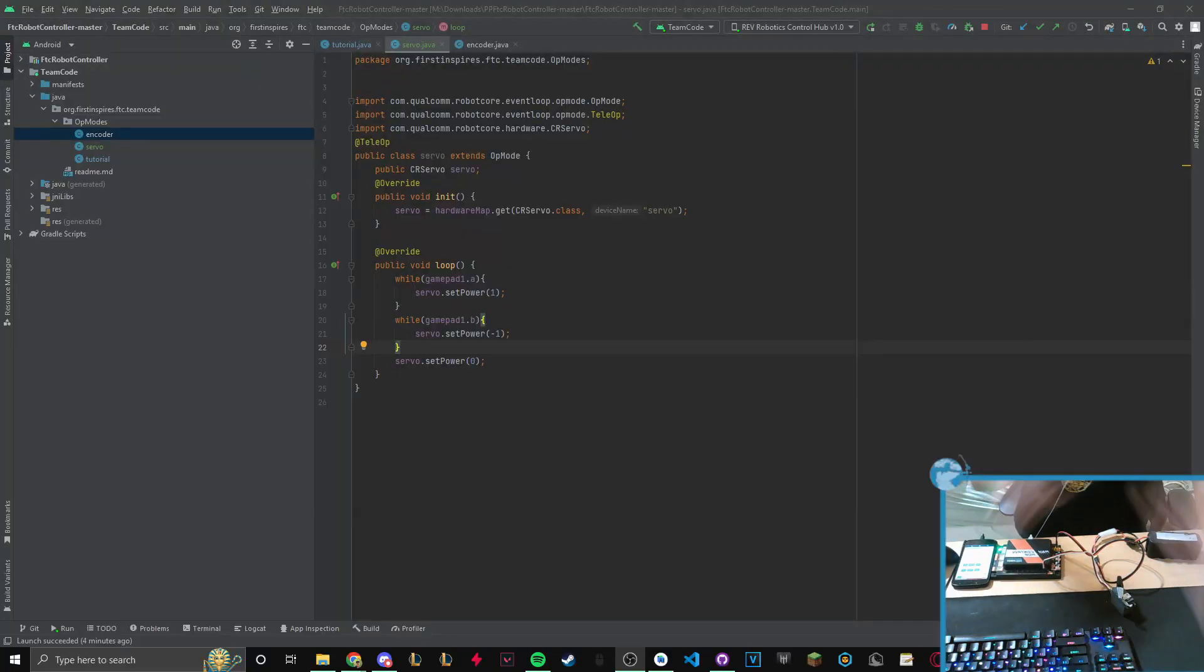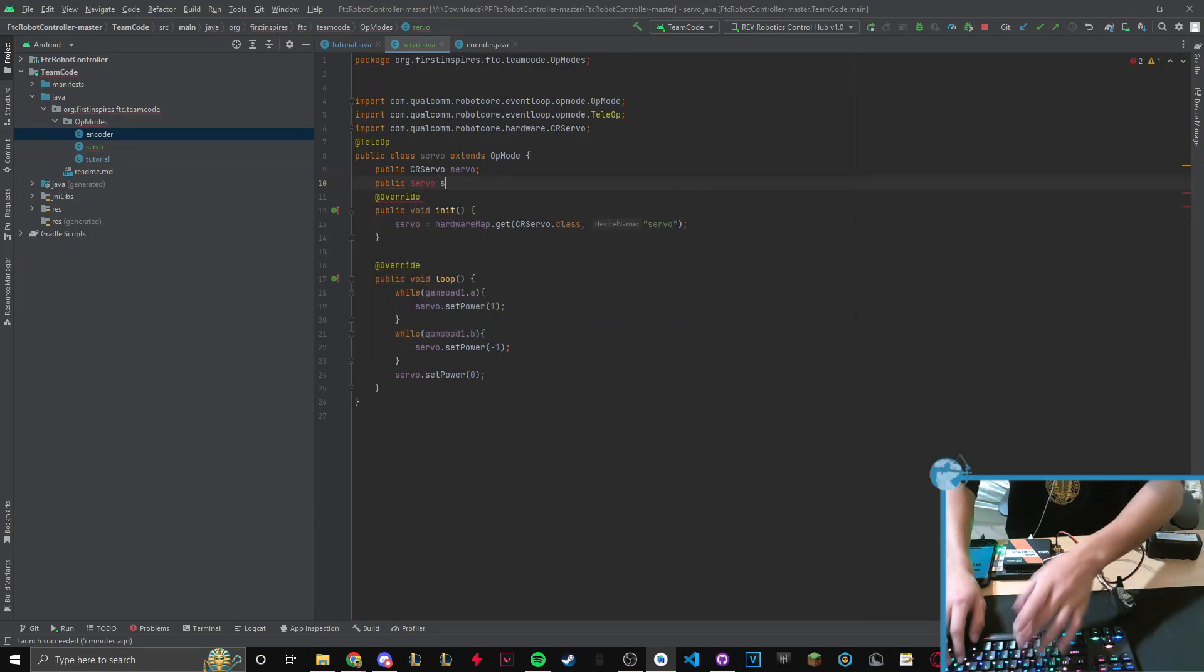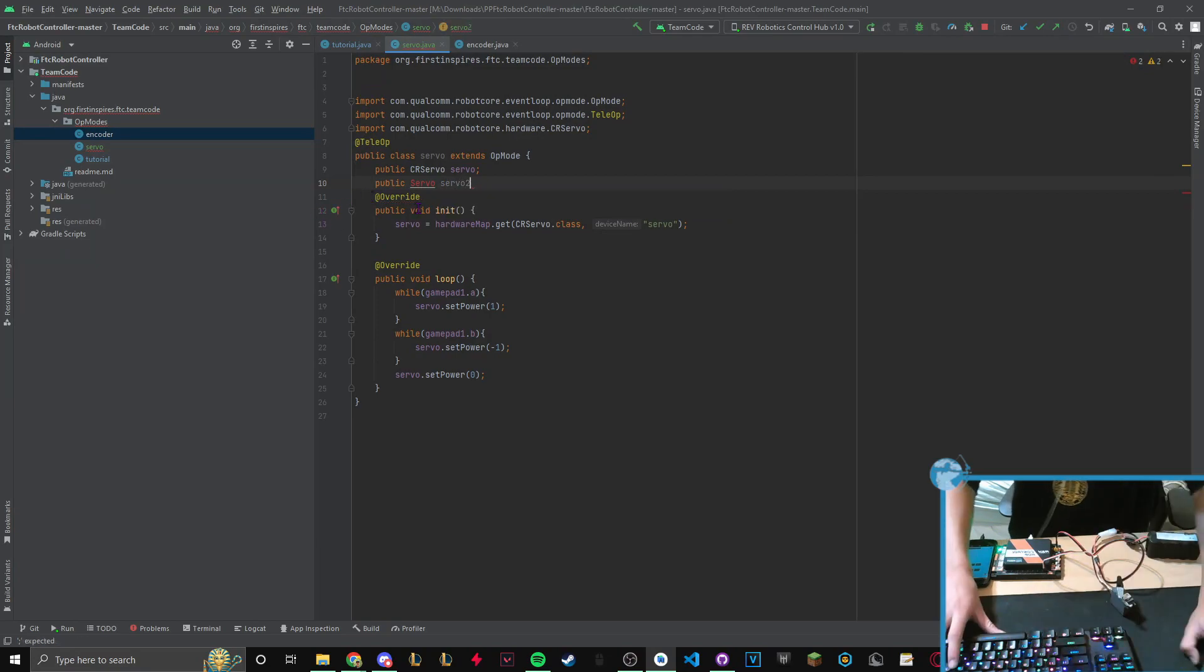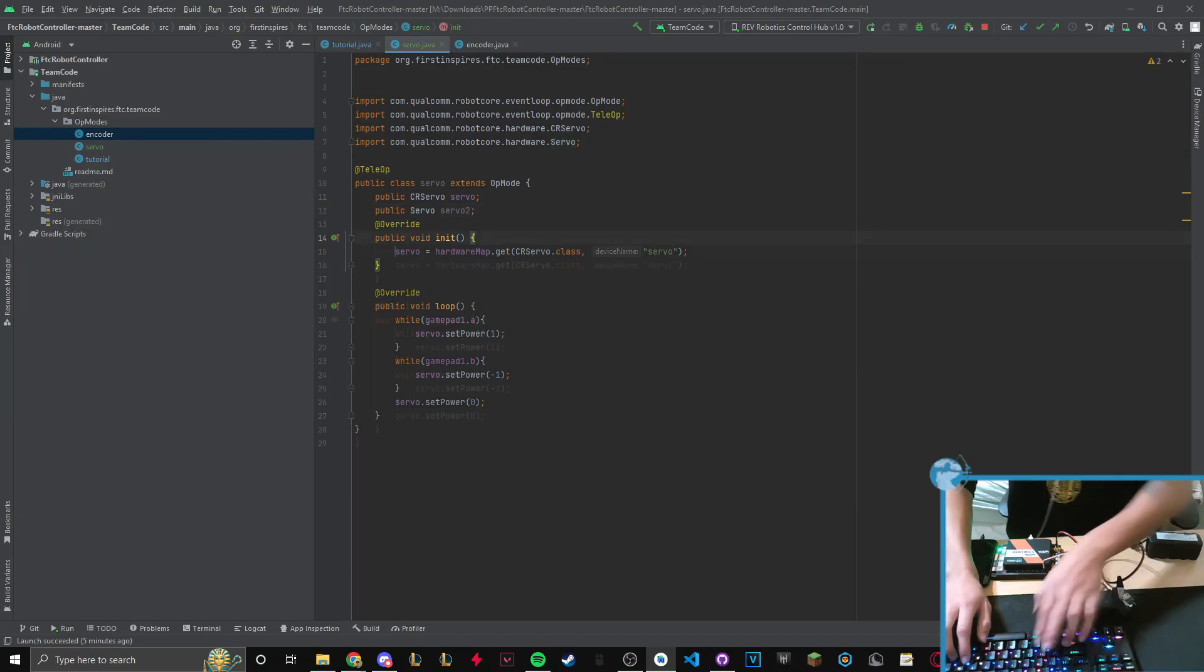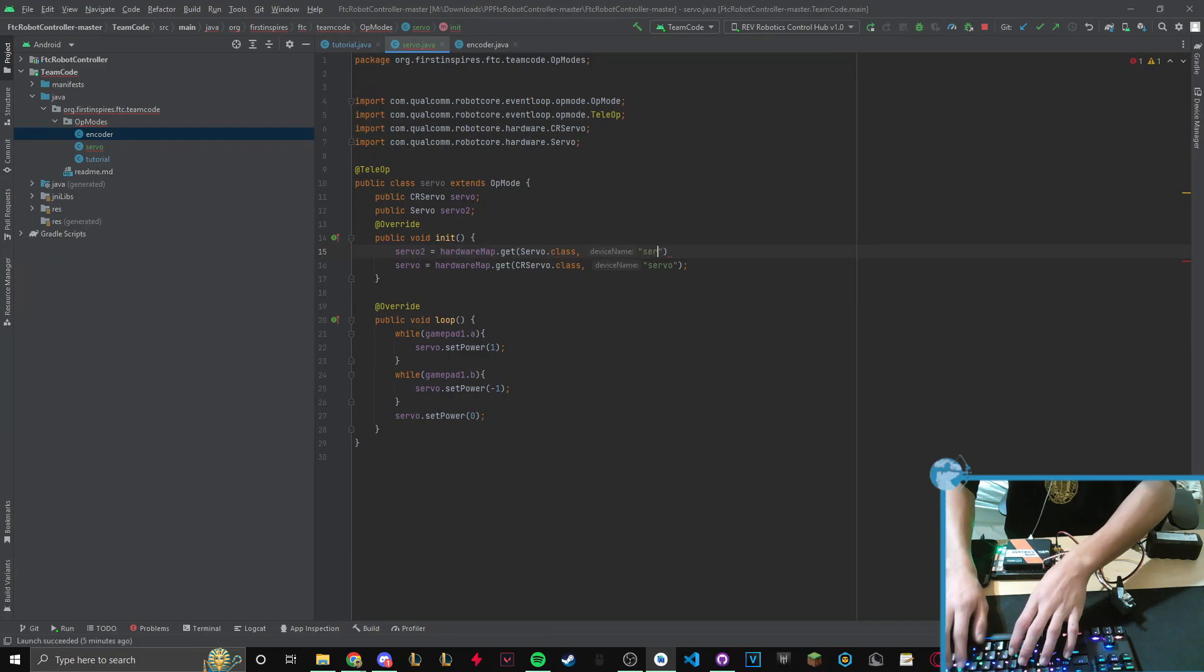Okay, so now I want to show you guys how to do a servo. So you guys have finished configuring your robot and programming your servos. So let's code it accordingly. So we're going to do public servo, and we're just going to call this servo 2. And we're going to import this class. And then we do servo 2 is equal to hardware map, get servo.class. And I name it servo. It's the same thing as last time. So I'm actually going to comment this code out. So that way, it doesn't really interfere with much.